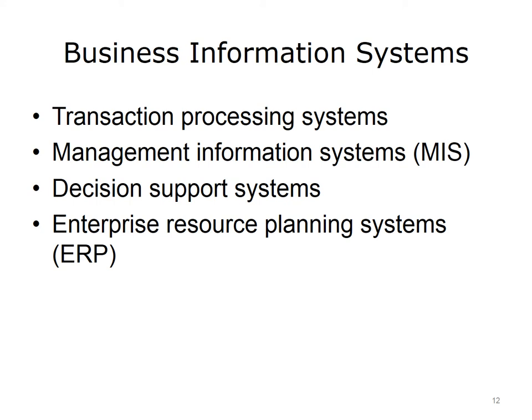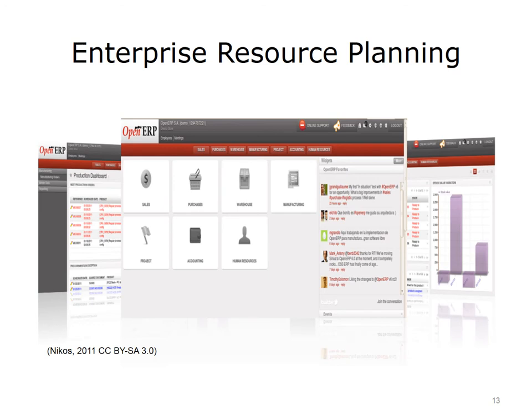ERP systems encompass all systems used by the business — manufacturing systems, production systems, human resource systems, transaction processing systems, sales systems, financial systems, and customer relationship management systems. ERP systems provide support for making decisions about the business as a whole and how it relates to its partners. This slide shows an example of an ERP system, OpenERP, a free, open-source system, and some of the interfaces used in the application. Note that there are icons representing all parts of a business process — sales, purchases, warehouse, manufacturing, accounting, and human resources.